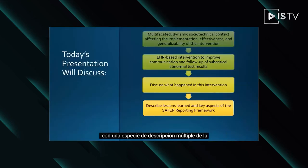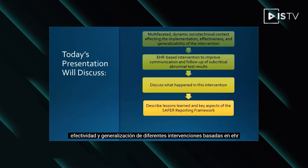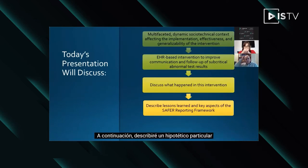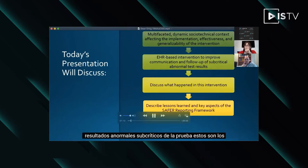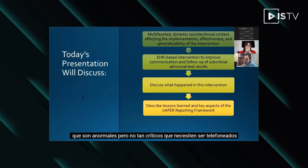Today I'll be discussing — I'll start off by describing the multifaceted dynamic socio-technical context that affects the implementation effectiveness and the generalizability of different EHR-based interventions. Following that, I'll describe a particular hypothetical example of an EHR-based intervention that was designed to improve communication and follow-up of some critical abnormal test results.